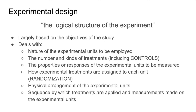The second factor includes the number and kinds of treatments, including controls, that you are going to perform. In an experiment, the treatment usually refers to the set of independent variables that you are going to manipulate to see an effect on your experimental units. Third, the properties or responses of the experimental units to be measured. This could be factors such as weight, height, and other factors for growth, or levels of certain kinds of chemicals, and so on.